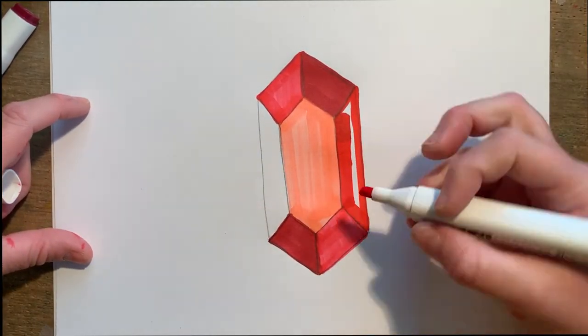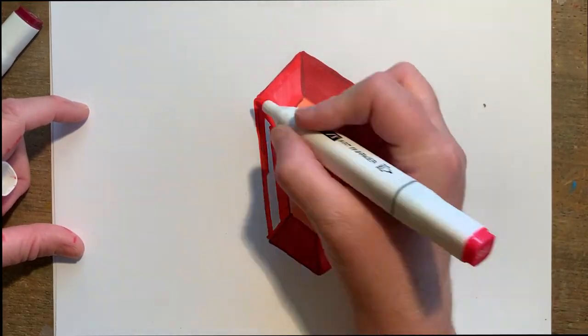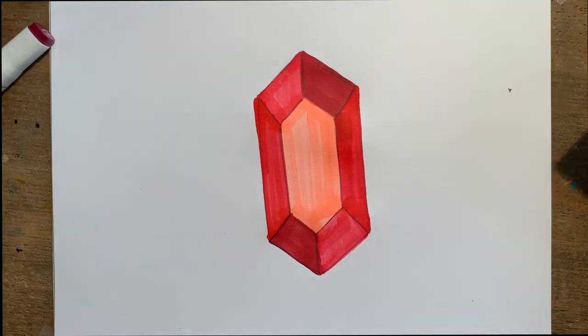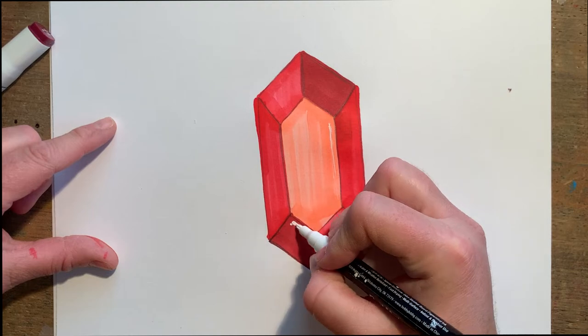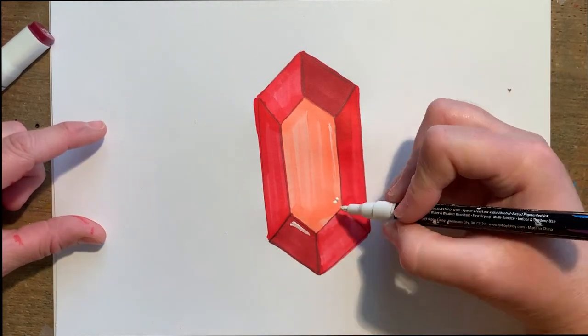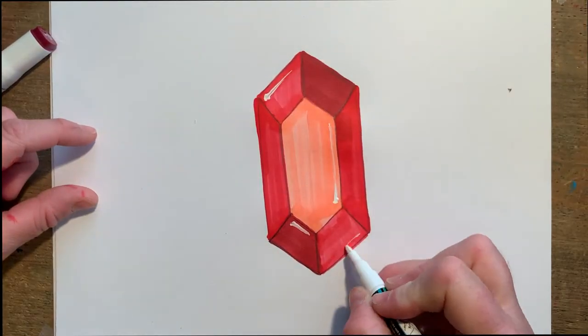Once I have all my red values down, I'm going to make it look like it's shining by using a white paint pen, just adding a few white highlights here and there and a little sparkle. I've added some shine to my ruby.